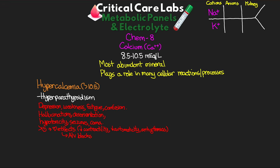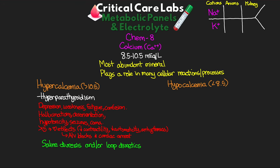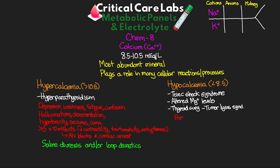Treatment for hypercalcemia usually involves saline diuresis — watching potassium and magnesium closely — and/or loop diuretics. Hypocalcemia is when calcium is too low — less than 8.5 mEq/L. Common causes include toxic shock syndrome, altered magnesium levels, post-thyroid surgery, and tumor lysis syndrome. Symptoms include paresthesia, muscle cramps, hyperreflexia, tetany, stridor, and seizures. Treatment is straightforward: replacement with either calcium gluconate or calcium chloride.